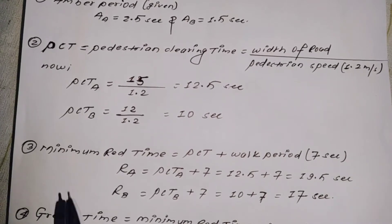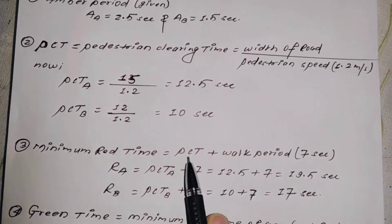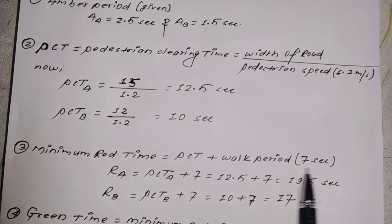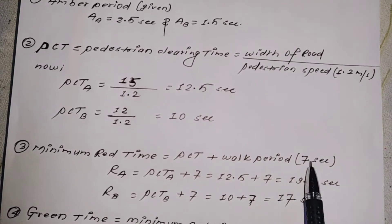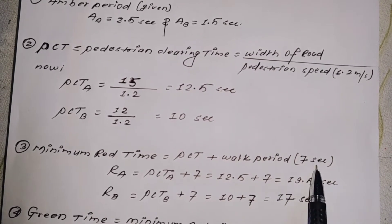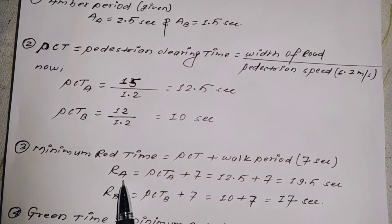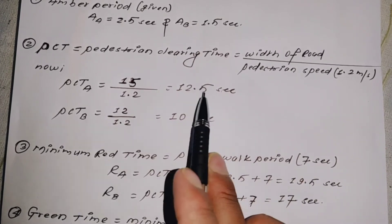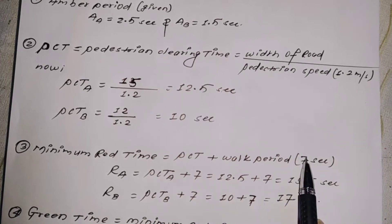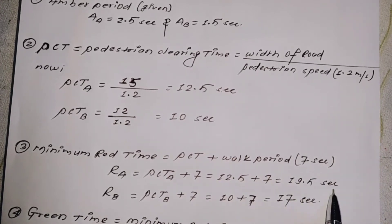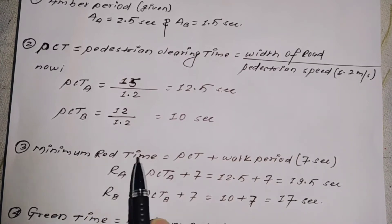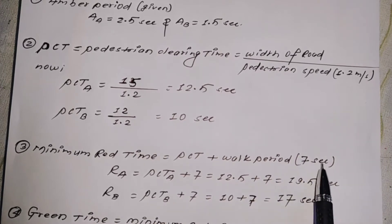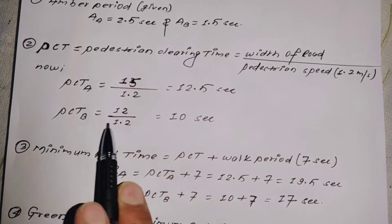Step two: minimum red time calculation. Minimum red time = pedestrian clearing time plus walk period. The normal walk period is 7 seconds. Minimum red time for Road A = PCT_A + 7 = 12.5 + 7 = 19.5 seconds. Minimum red time for Road B = PCT_B + 7 = 10 + 7 = 17 seconds.